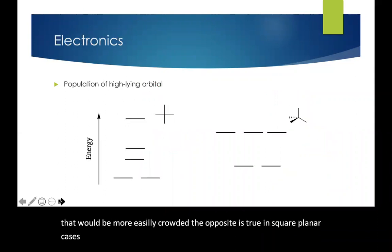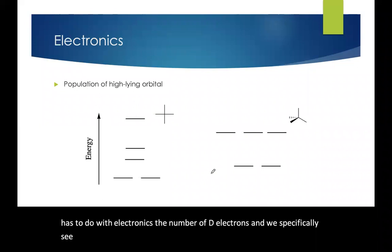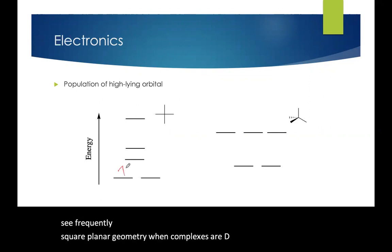The other factor that can govern whether compounds are square planar or tetrahedral has to do with electronics, the number of d electrons. And we specifically see frequently square planar geometry when complexes are d8. So I'll just fill in this diagram as d8.